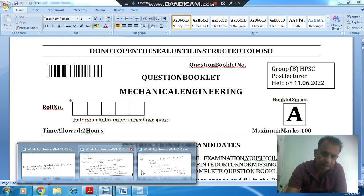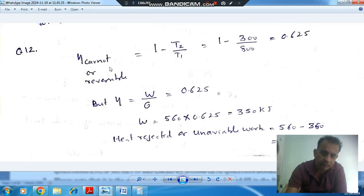So, here, as the engine is reversible, efficiency is 1 minus T2 by T1. T2 is the rejection temperature, that is 300 K, and T1 is the supply temperature, that is 800 K. So efficiency comes out as 0.625.